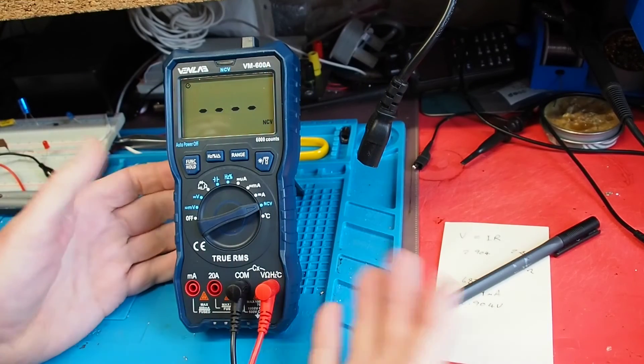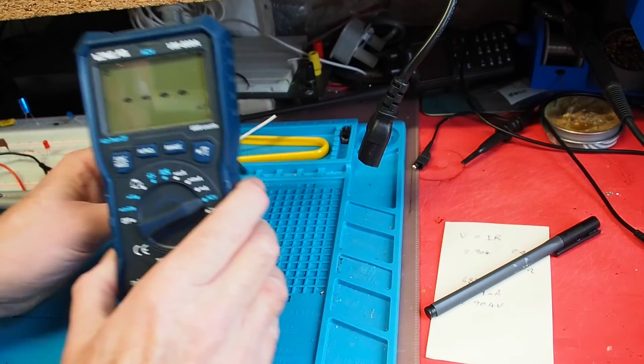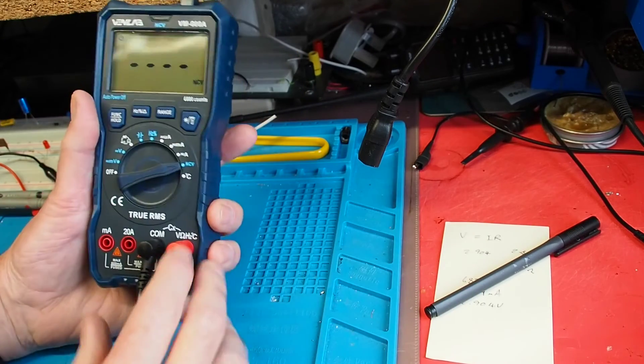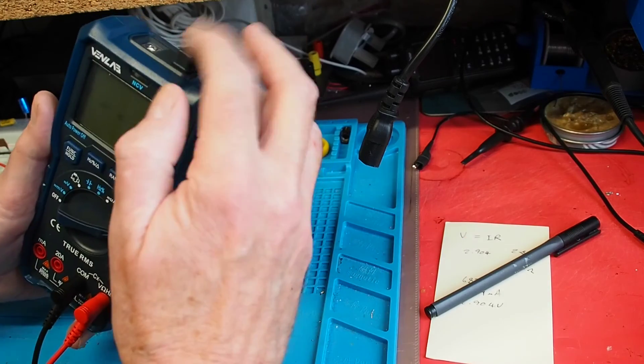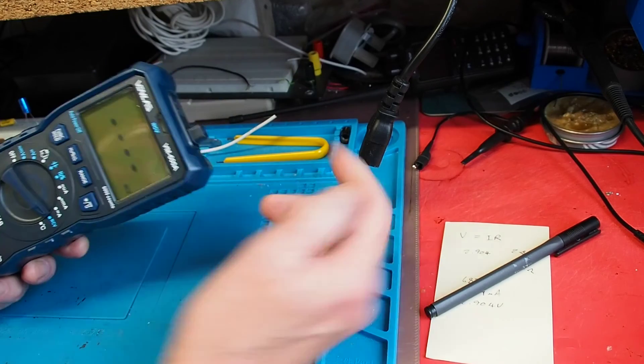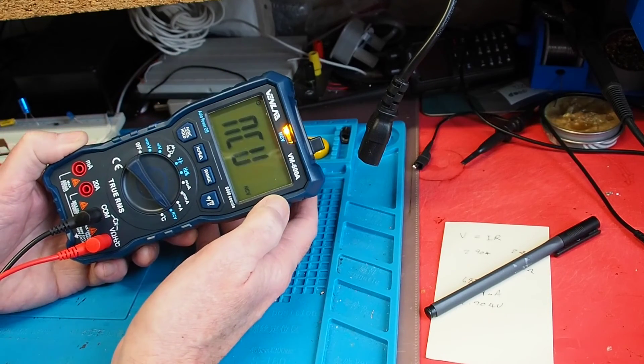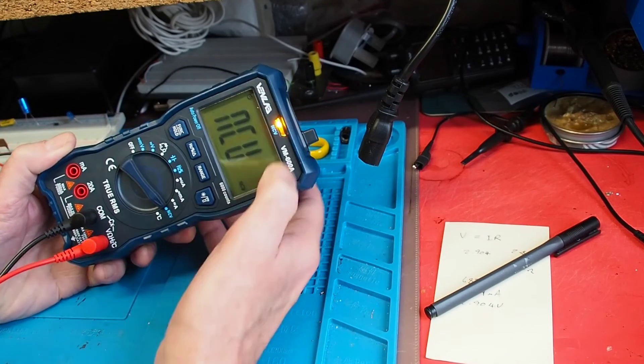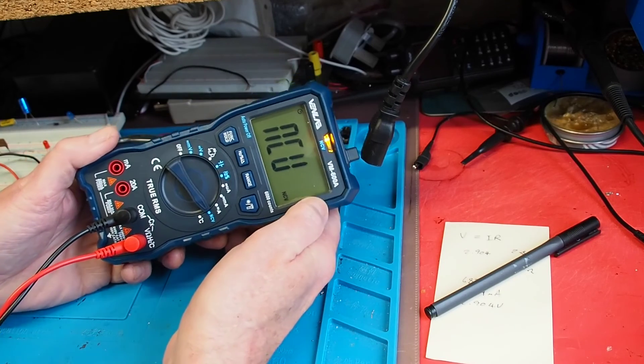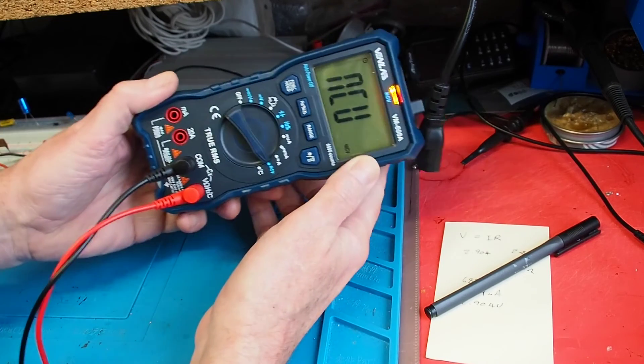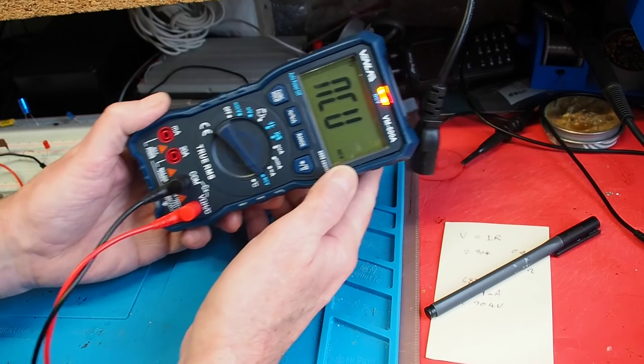Something I don't really use is this remote detection of AC voltage, but I know a lot of you do. On the NCV setting, if I move towards this Euro plug which is energized, we start to get a yellow LED and a beep. If I move really close we get the red LED and a faster beeping.